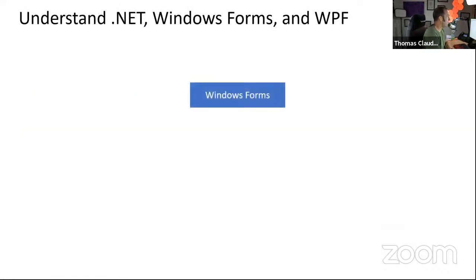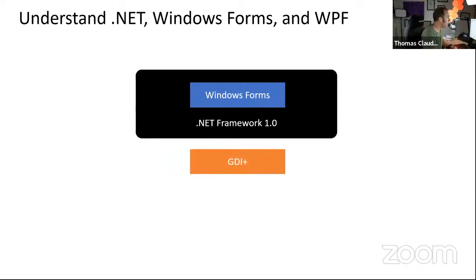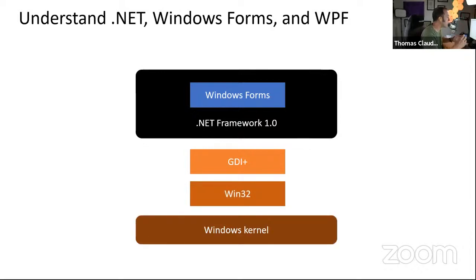Let's go back in time. In 2001 or 2002, Microsoft introduced Windows Forms with .NET Framework 1.0. At that time there was no choice — if you wanted to build a desktop application with .NET, you went with Windows Forms. Windows Forms is built on top of GDI+, the Graphics Device Interface, a layer of the Win32 API that belongs to the Windows kernel. Windows Forms is a wrapper around this technology.